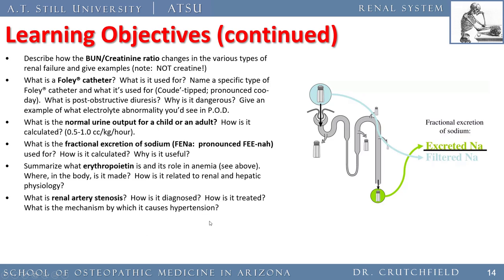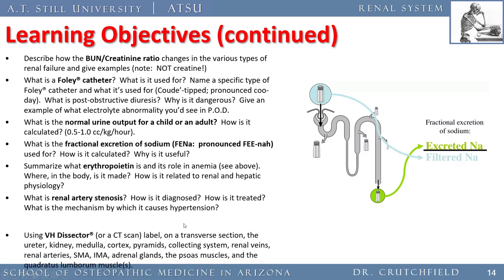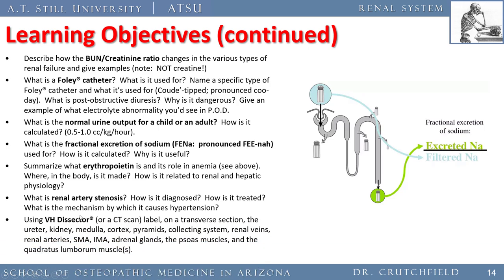Using CT scan on transverse section, make sure you can identify the ureter, kidney, renal medulla, renal cortex, renal pyramids, collecting system near the hilum, renal vein, renal arteries, SMA, IMA, adrenal glands, psoas muscle, and quadratus lumborum muscles.